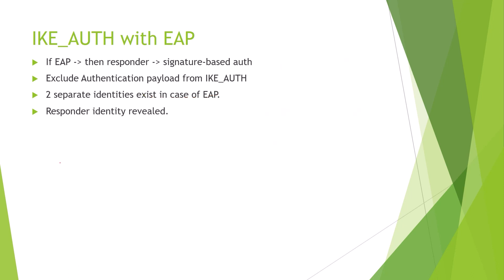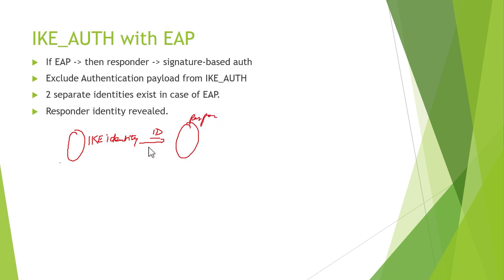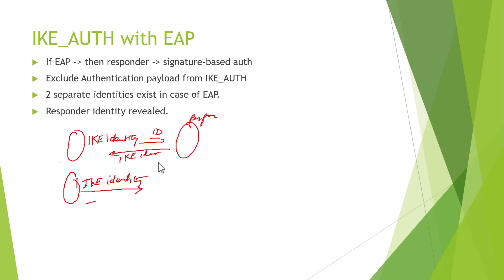In normal cases, the initiator sends an IKE identity payload (the ID payload). The responder validates this IKE identity and sends back its own IKE identity. The other side validates it and it is done. In the EAP case, when the IKE identity arrives at the responder's side, the responder does not do direct validation. Instead of direct validation, what does it do? It sends an EAP request message to the initiator.